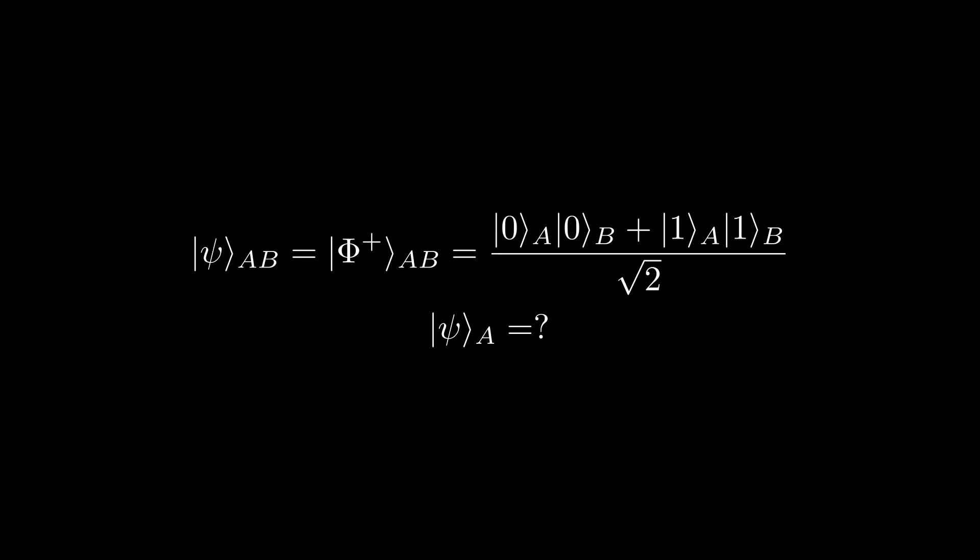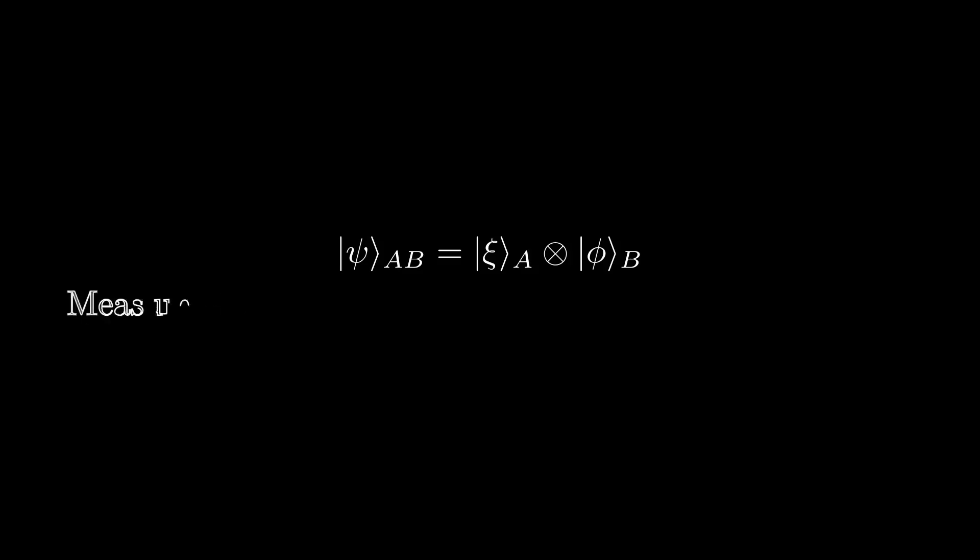So, how do we even approach this? Well, consider what would happen if we instead had a product state. Since A is not entangled with B, we can measure B and discard the measurement outcome without changing the state of A.